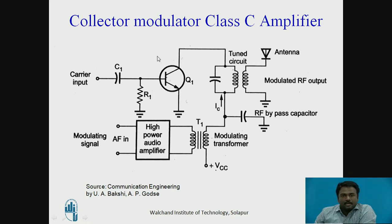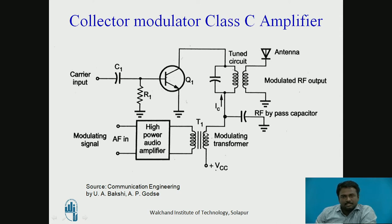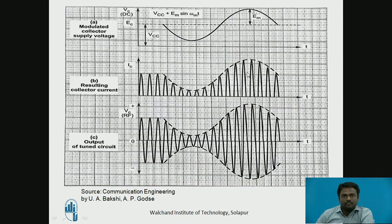To understand the working, we consider two cases: absence and presence of the modulating signal. During absence of the modulating signal, there is no current passing through the primary of the modulating transformer winding, so the voltage in the secondary winding is zero. That means plus VCC is directly connected to the collector through the tuned circuit. When the modulating signal is zero, the amplitude of plus VCC remains constant, so the current generated is constant, resulting in a constant amplitude AM output.